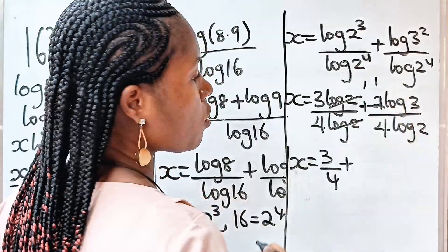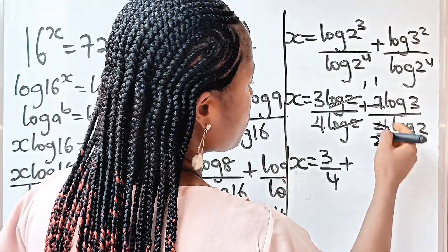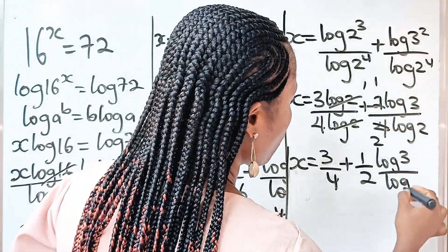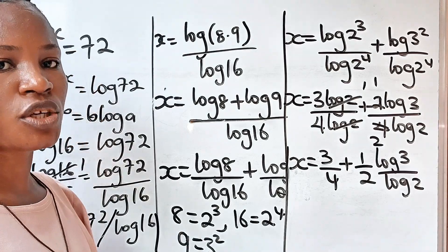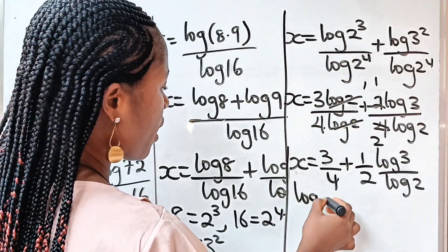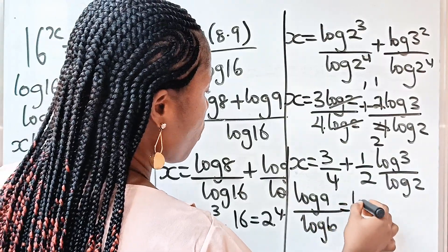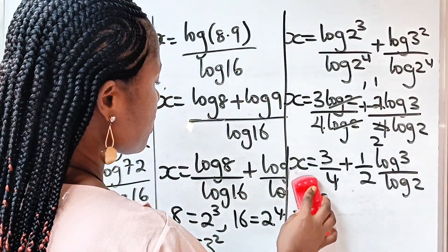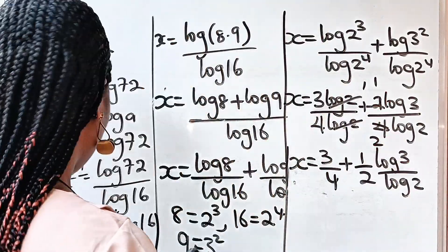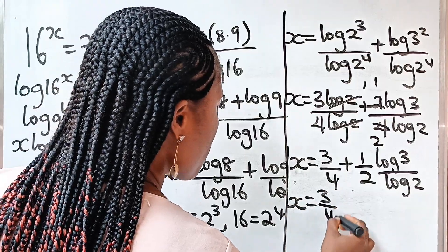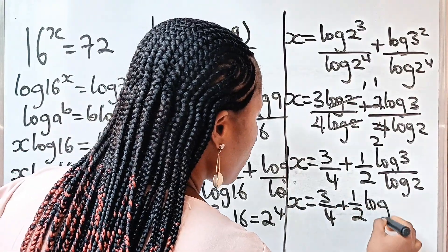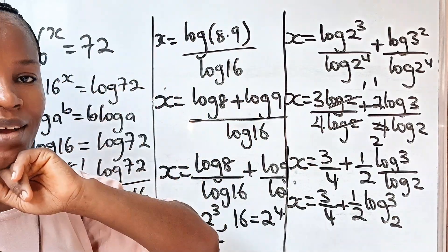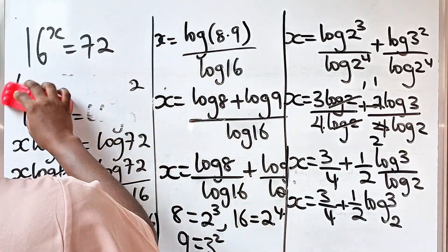Plus, the 2 divides into 4 to give 2, so we have one half log 3 divided by log 2. Now using the change of base formula — log a divided by log b is equal to log a base b — we can write this as x is equal to 3 over 4 plus one half log 3 base 2. This is the value of our x.